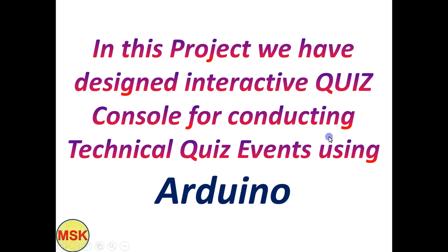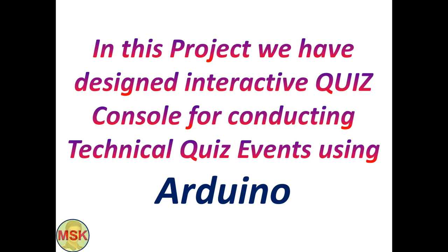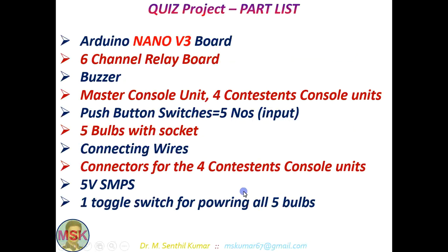In this project, we have developed a quiz console — a quiz master program. The quiz master will be having one control button. Then there are four different teams: team A, B, C, D. Each contestant console will be having a button and a bulb. So whoever, after the question is asked by the quiz master, knows the answer, they will press first. After that, if any other person presses the button, that should not be in effect. Pause the video and see the part list. I will be sending all these things in the description — by clicking that link you can download everything.